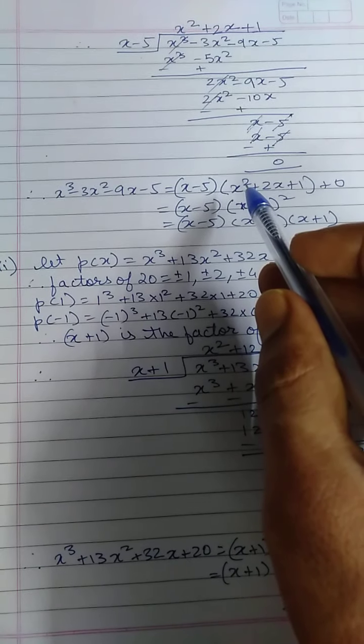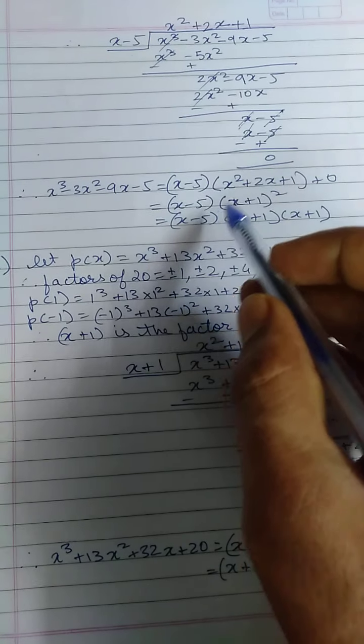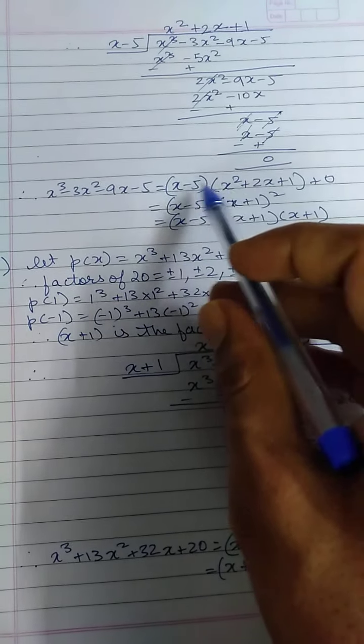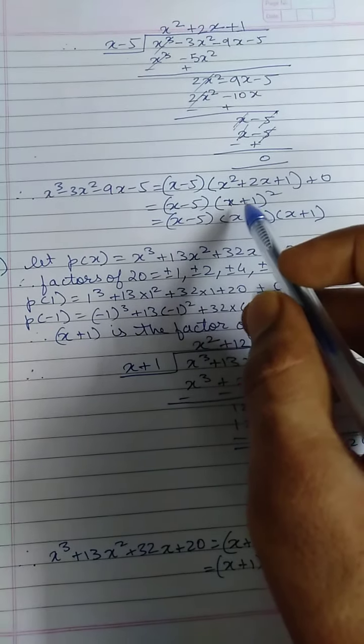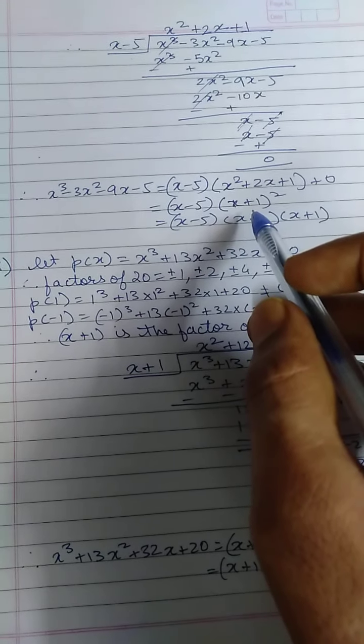This was the second method that we have done. Our first method was where we split the terms to find out the factors, and then when we come up to this step, we again split the middle term. In this case, this is directly in the form of an identity, so I can write it like this.